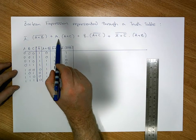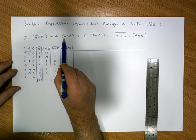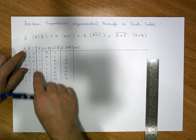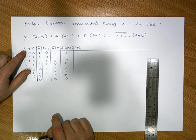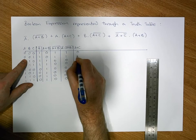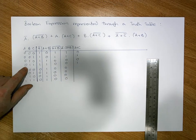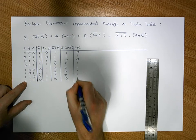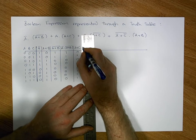Moving on, we need to calculate A ANDed with (A OR C) for the second term. First we calculate A OR C — an OR of the A column and the C column. An OR only ever gives a zero when both inputs are simultaneously zero. We get a zero where both are zero, a one where they're not, and so on, ending up with zero, one, zero, one, one, one, one, one for our A OR C column.